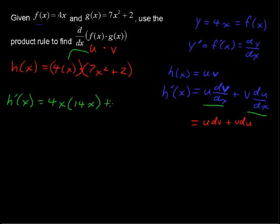Plus v, our v function, that's 7x squared plus 2, all being multiplied by the derivative of the u function. So that is just 4, the derivative of 4x is just 4.